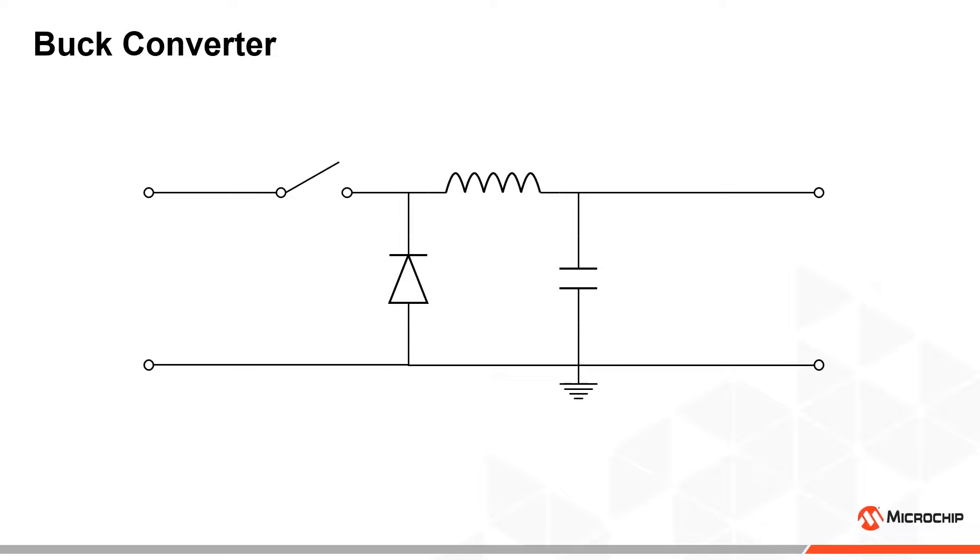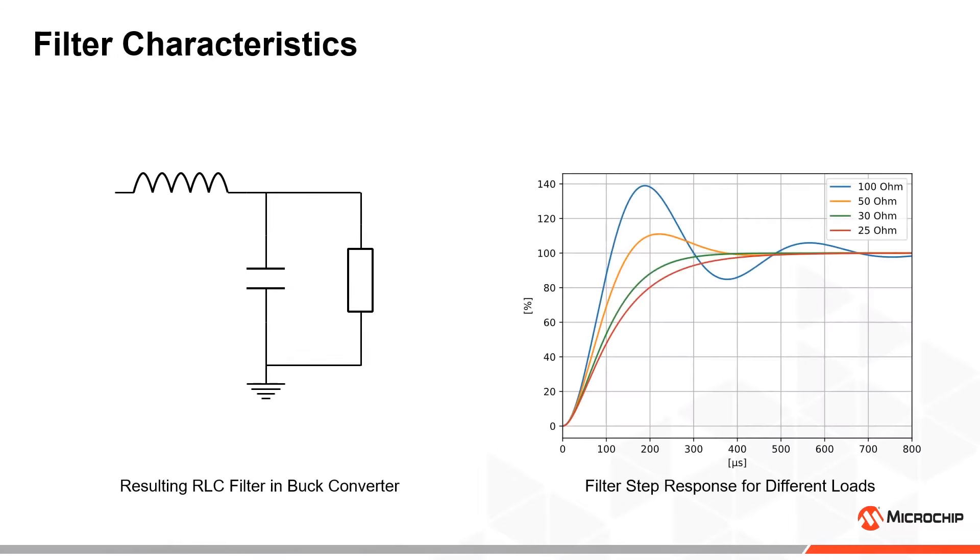This circuit will resist the rapid changes in voltage caused by the switch, which results in an output voltage equal to the input voltage times the duty cycle. The load works as a dampening resistor in an RLC filter and affects the step response. Changes in the load current will affect the time it takes for the capacitor to reach a certain voltage level.